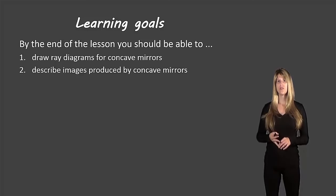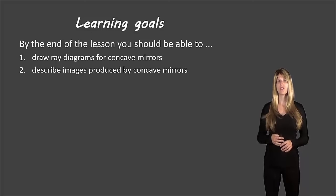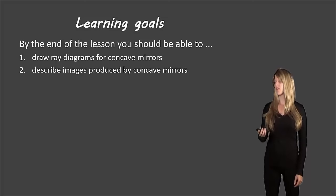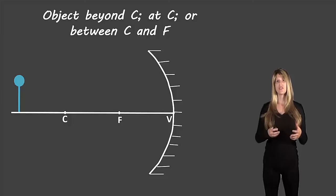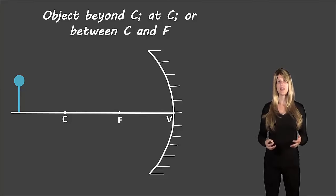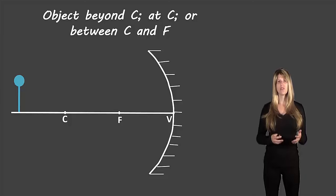For number two, those follow the rules that we learned in ray diagrams for plane mirrors. If you haven't watched that video yet, please watch that video first — I'll put a link in the description box below. There are several different rules for drawing ray diagrams for concave mirrors, and those rules depend on the location of the original object, based on points along the principal axis.